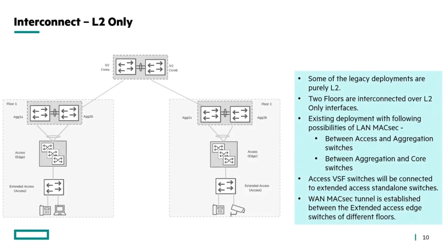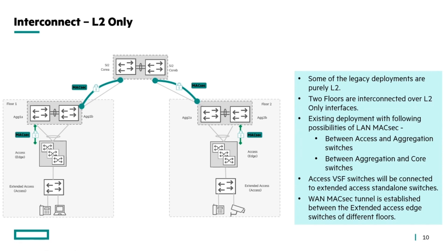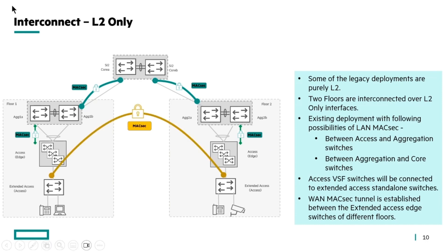Let's see the use cases for this feature. Consider an L2 deployment where two floors are interconnected in a purely L2-based deployment. When there is a MACSEC session between the access and aggregation layer, or between aggregation and core, these are LAN-MACSEC point-to-point sessions. Previously, adding WAN-MACSEC between access switches in the same environment was not possible. With this custom EtherType, both LAN-MACSEC and WAN-MACSEC can be deployed in the same environment.